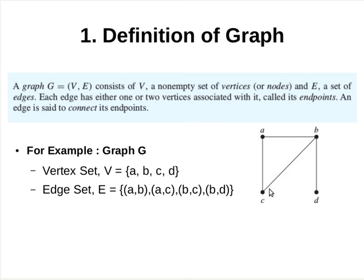The following graph G consists of four vertices: A, B, C, and D, and four edges: AB, AC, BC, and DD.